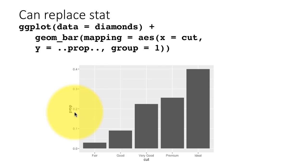When you do this, you see the proportions, and as we thought, ideal is coming out at roughly 40 percent, and so on.